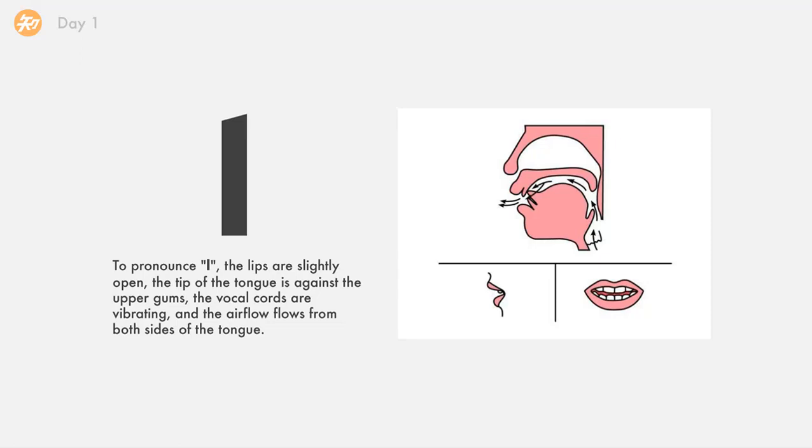The next one is l. To pronounce l, the lips are slightly open. The tip of the tongue is against the upper gums. The vocal cords are vibrating and the airflow flows from both sides of the tongue.